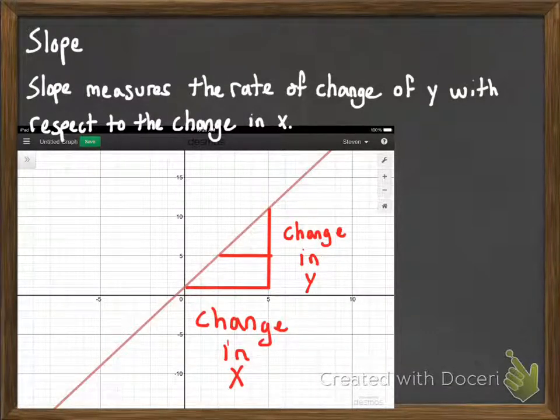And so slope for a line, the rate of change for a line, is constant. And so we only have to find it once, with one pair of points, and then we have it.